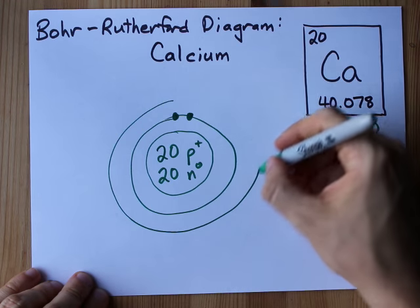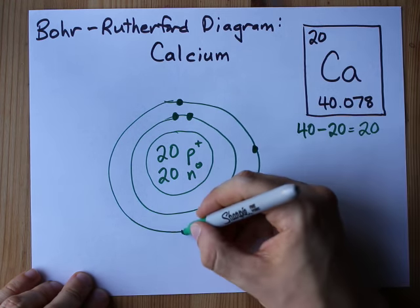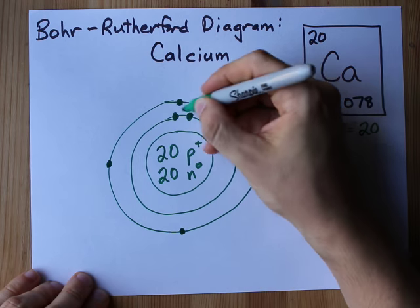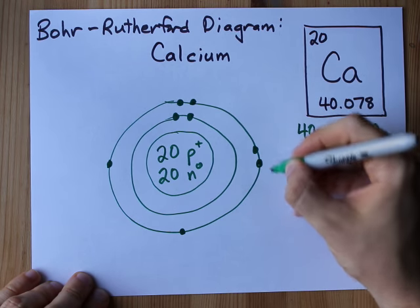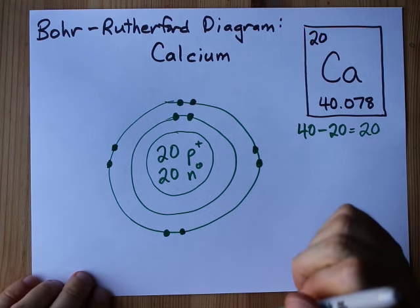The second shell holds up to 8. We're going to need more than that as well. So 1, 2, 3, 4, 5, 6, 7, 8. That's 10 electrons total in the second shell.